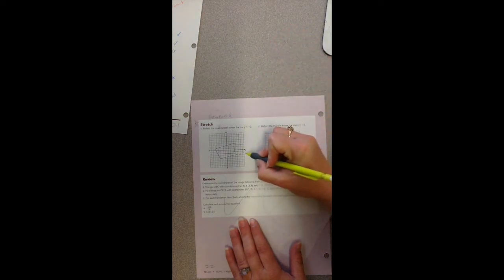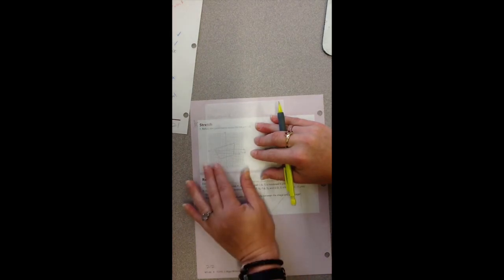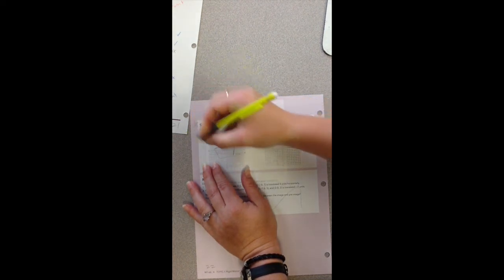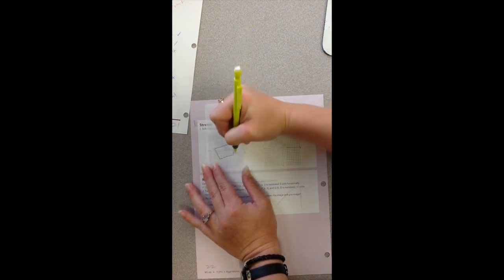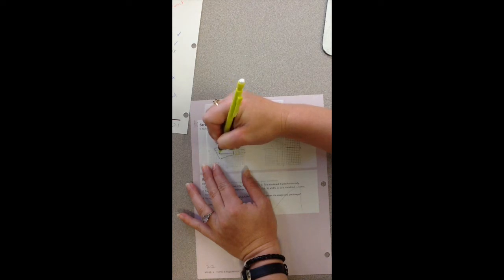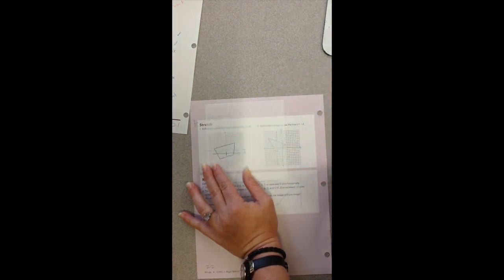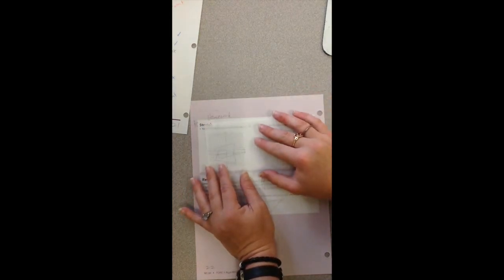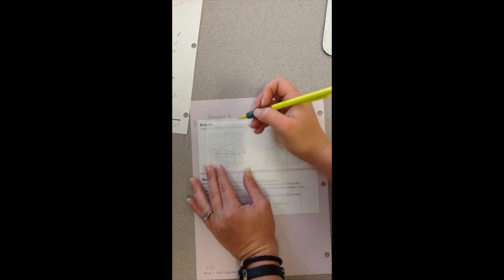So number one says reflect the quadrilateral across line y equals negative two. So that's this line down here. So I know that we've been using the axes, but this time we're using this y equals negative two. So we're going to trace our shape and then I'm also going to trace the line. And then that will help me make sure I have it on the right plane vertically. But to make sure I have it on the right plane left and right, I'm going to give myself a little crosshair from the axis. So now when I flip it over, it's really easy to line those up. So I'm lining up the y equals negative two line, the axis line, and that just helps me with that.